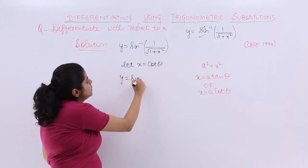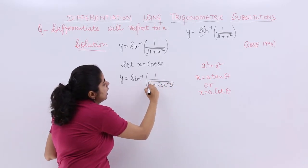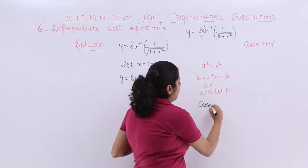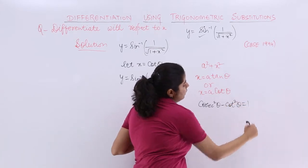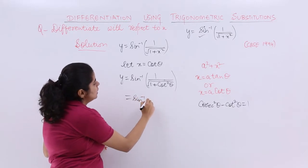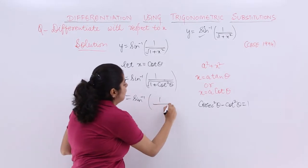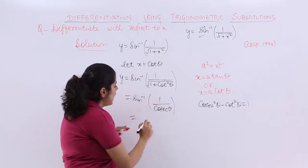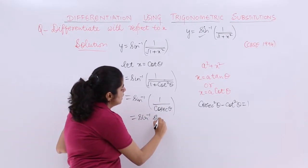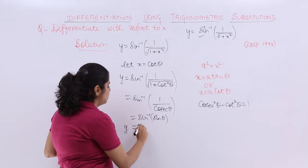Now it becomes y = sin⁻¹(1/√(1+cot² θ)). Using the formula 1 + cot² θ = cosec² θ, this becomes sin⁻¹(1/cosec θ), which simplifies to sin⁻¹(sin θ). Since sin and sin inverse cancel each other, we get y = θ.